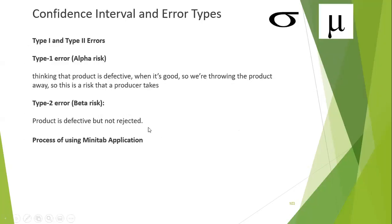Confidence level and error types are very important. When measuring and forming hypotheses, there is error we are accepting in our calculations. For example, with GCR projections, we sometimes cannot meet targets because of process errors. There are two types of error: Type 1 error, called alpha risk, and Type 2 error, called beta risk.